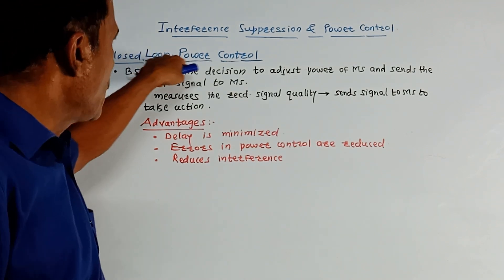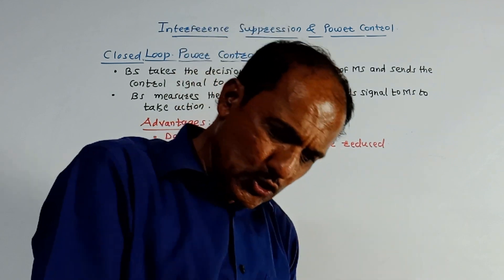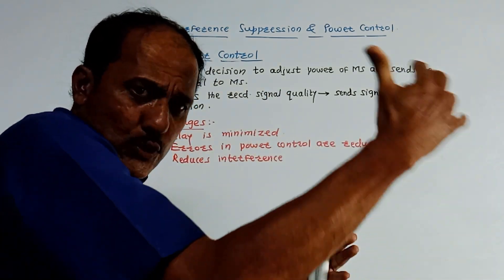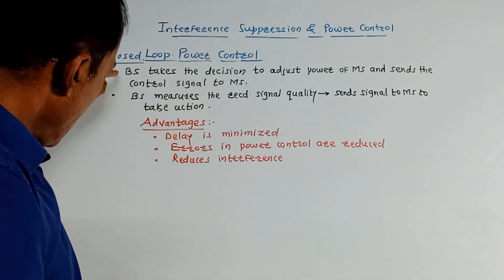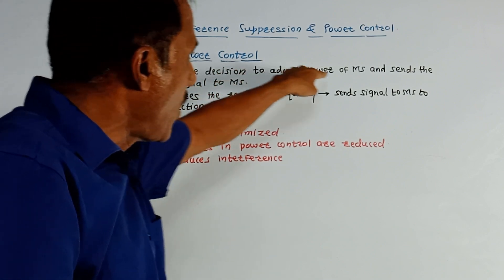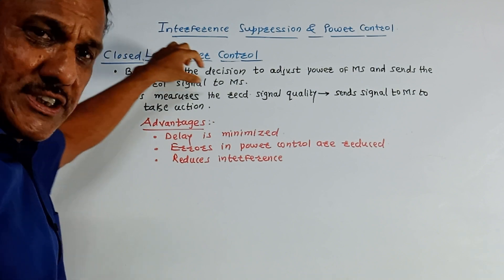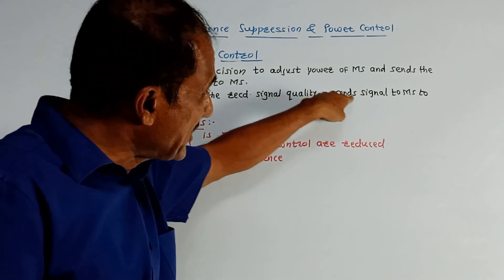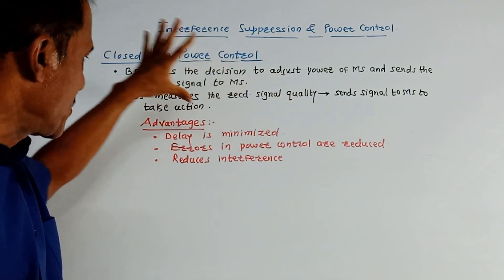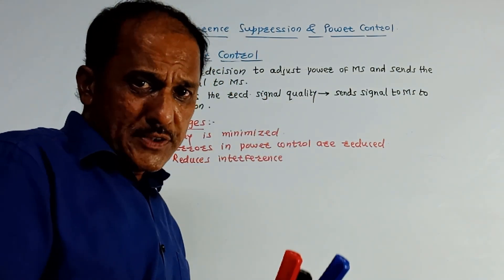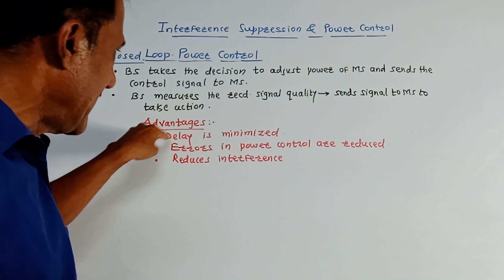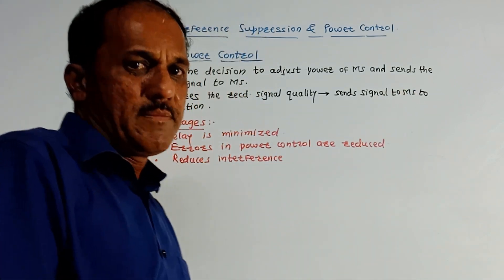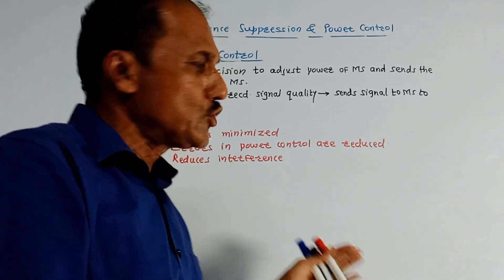The second type is the closed loop control system. As the name indicates, a feedback mechanism is used — a signal is taken from the output and transmitted back to the input side. The base station (BS) takes the decision to adjust the power of the mobile station (MS) and sends a control signal to the MS to adjust its power. The base station measures the received signal quality and sends a signal to the mobile station to take proper action. This system avoids the drawbacks of open loop: delay is minimized, errors in power control are reduced, and it reduces interference more effectively than open loop. These points serve as a comparison between open loop and closed loop control systems.